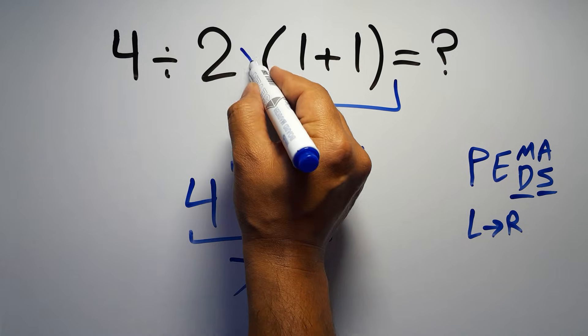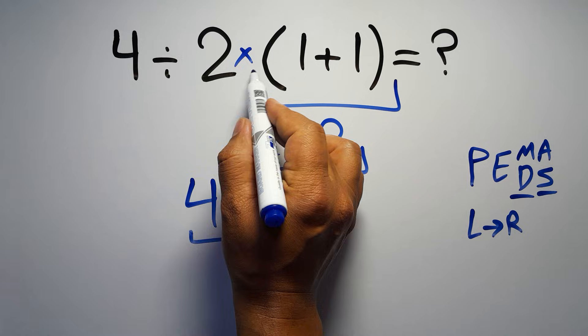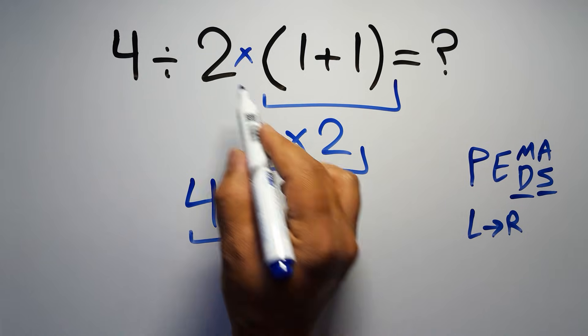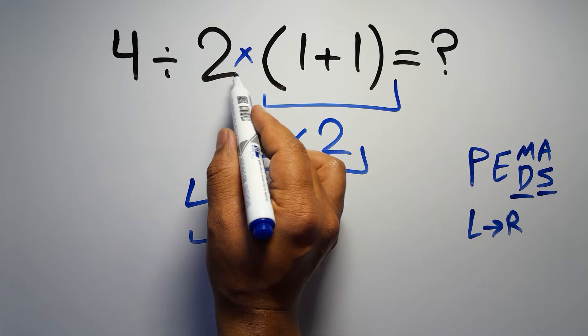have one division, one multiplication, and one parentheses. Inside this parentheses we have one addition. Here we have a multiplication because in mathematics, when a number is placed next to parentheses, it means multiplication and we usually don't write